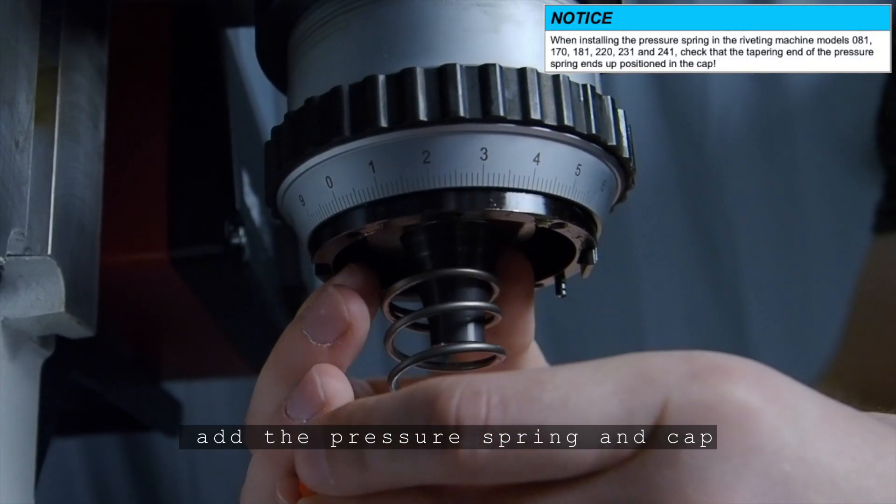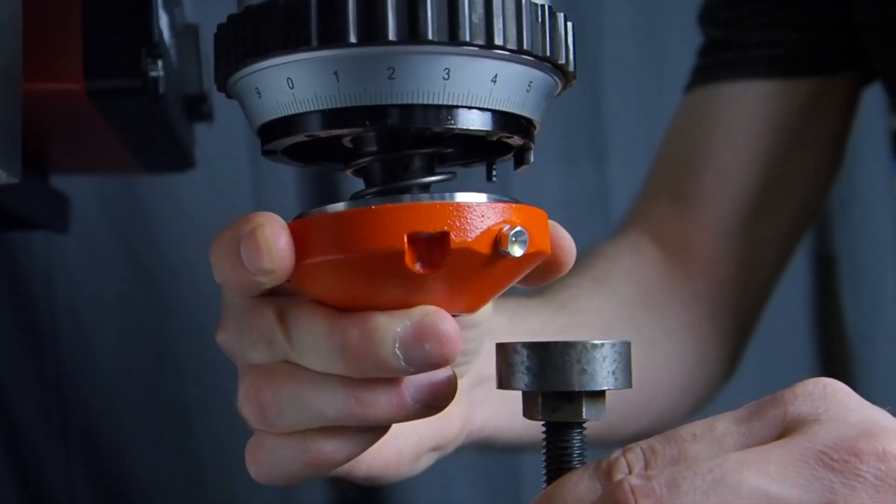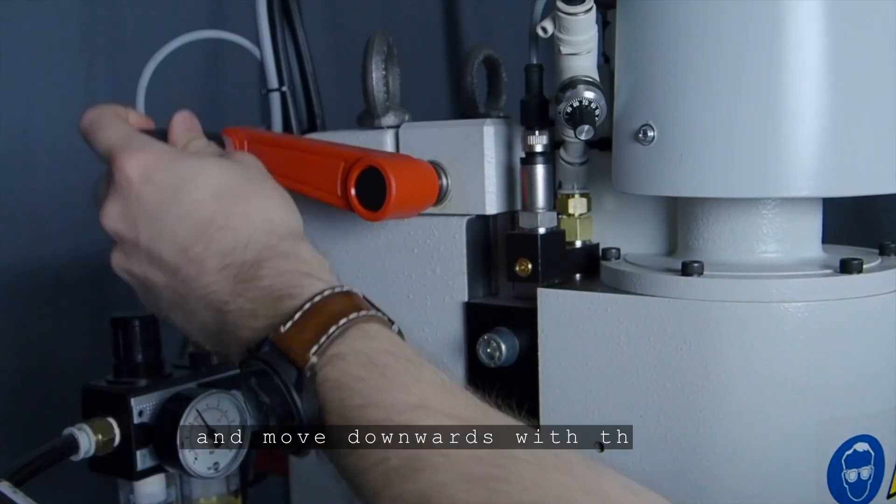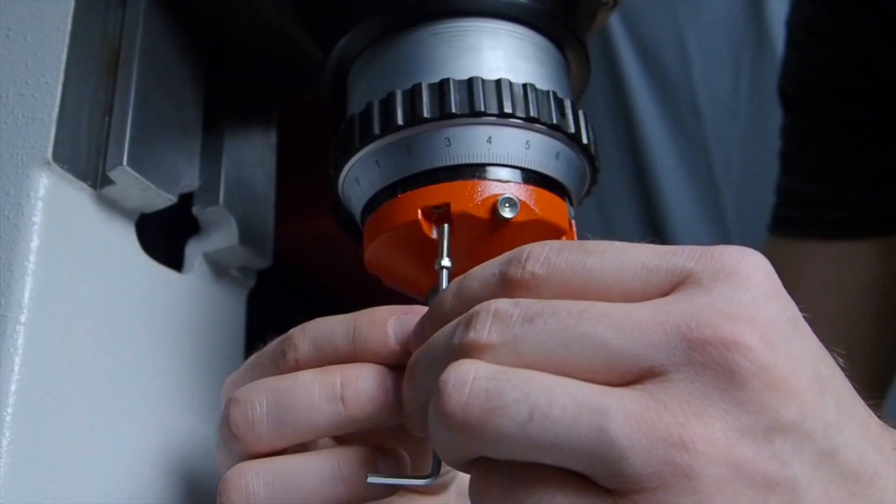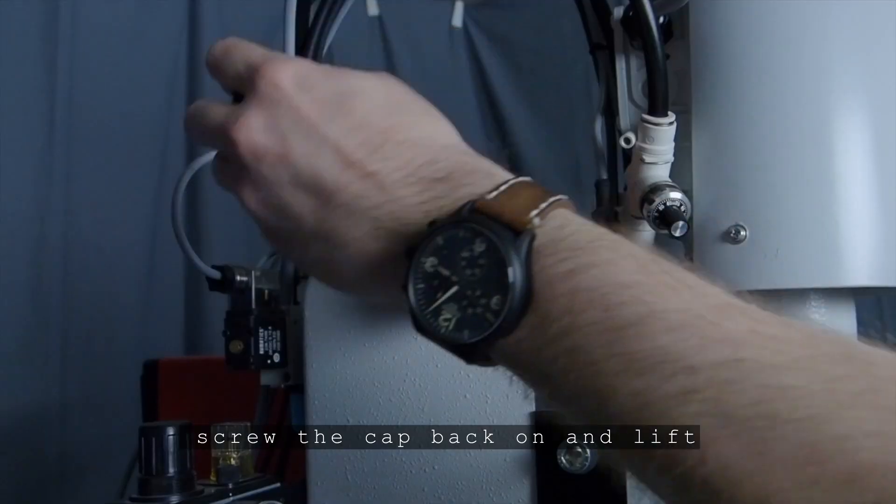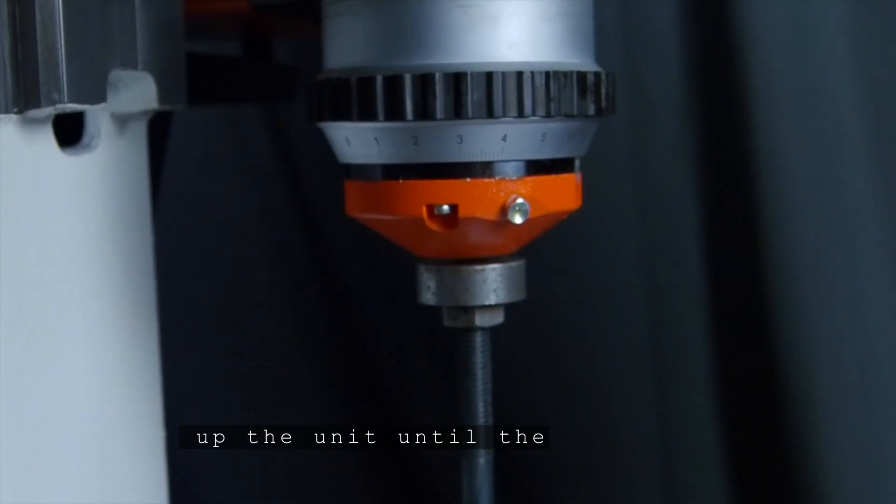Add the pressure spring and cap to the spacer and move downwards with the unit until the cap sits in position. Screw the cap back on and lift up the unit until the right position.